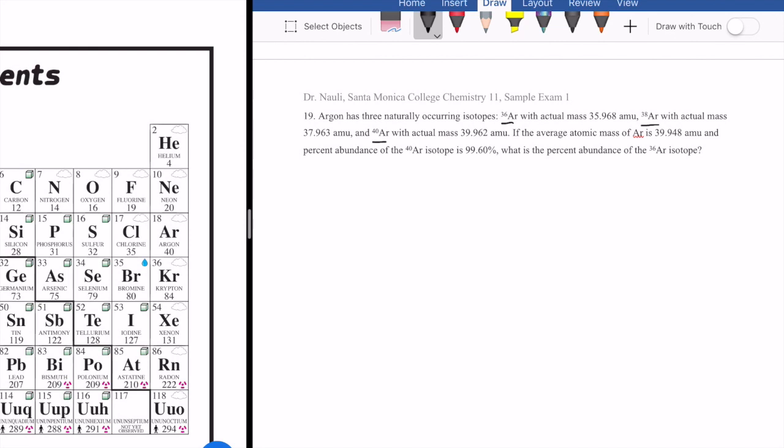And then it tells you that those are the isotopic masses, all in AMU units. And then they also tell you that the average atomic mass is 39.948, and then the percent abundance of the argon 40 is 99.6. So the question is, what's the percent abundance of the argon 36? So this is your isotopic mass, average mass calculation, percent abundance calculation that we also learned in class.